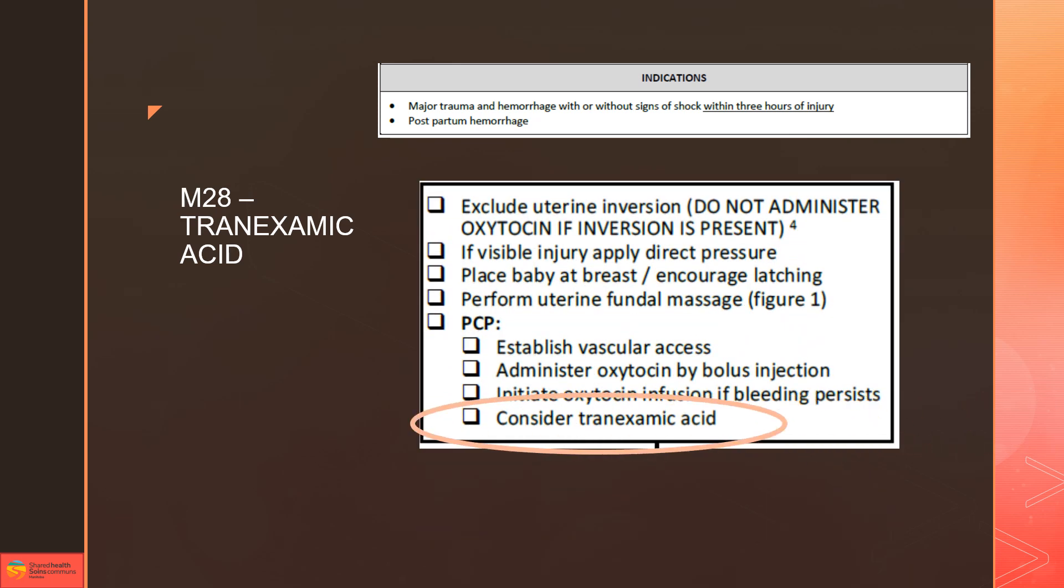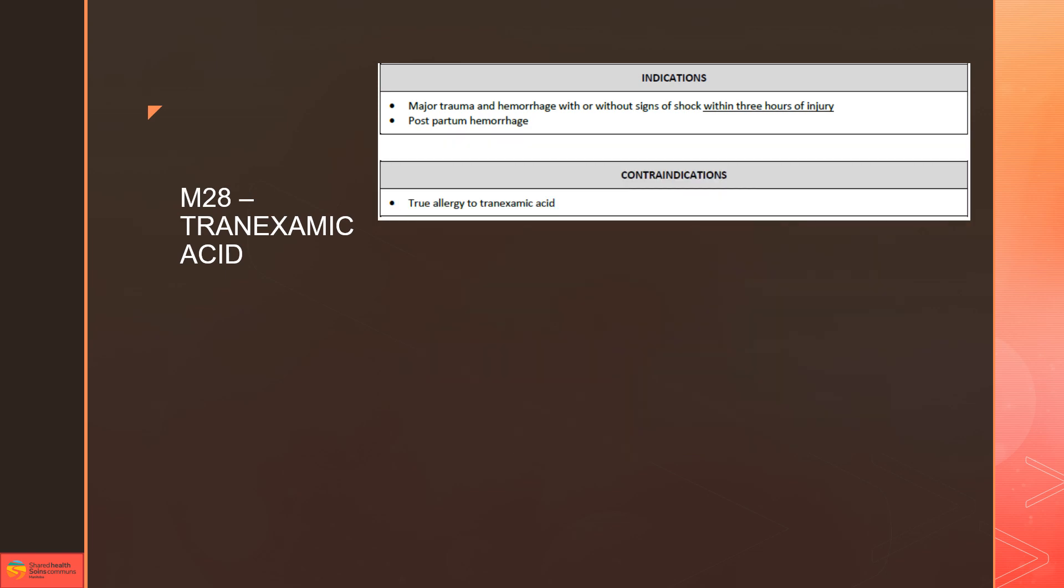In the new care map update, CareMap D08 postpartum hemorrhage does say consider tranexamic acid after an oxytocin infusion. So make your decision which medication you want to give, or if you want to give both at the same time you're going to need to use two separate IVs. We don't give TXA if someone's allergic to it—that's pretty much the only contraindication at this time.